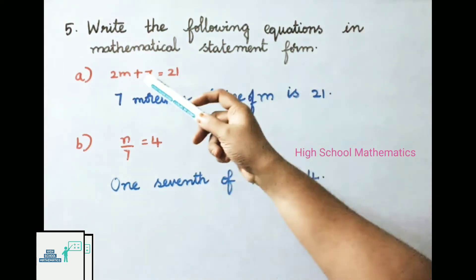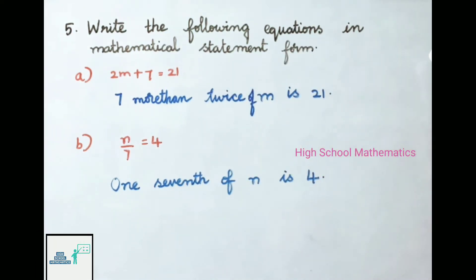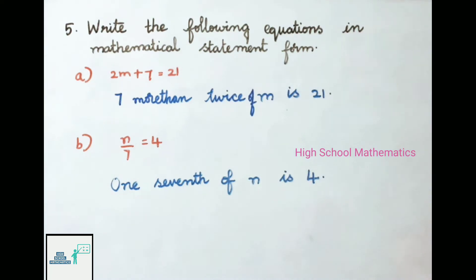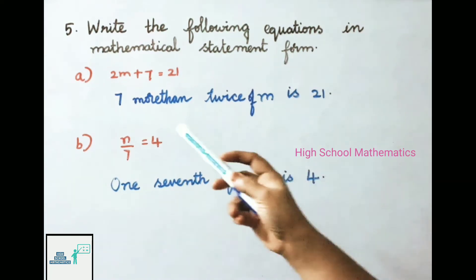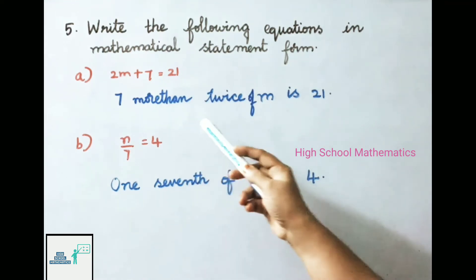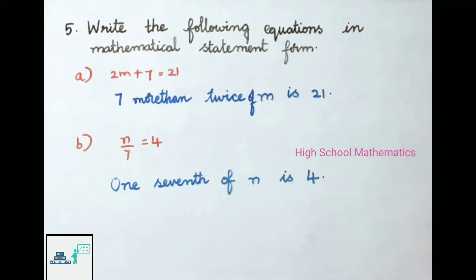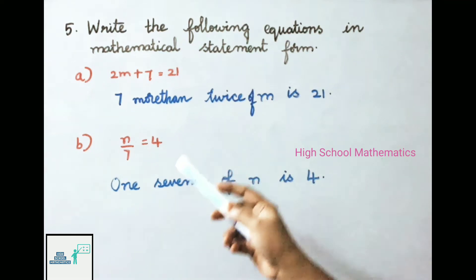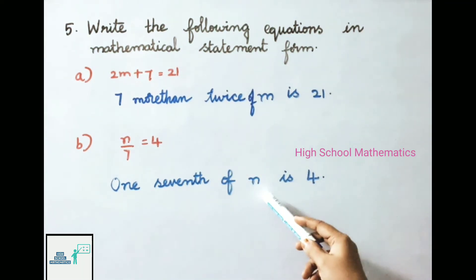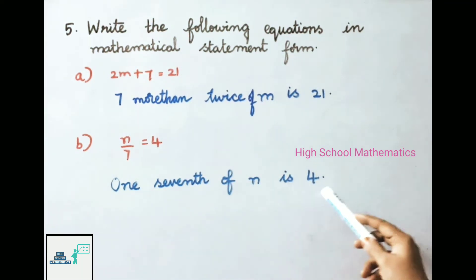Question 5: write the following equations in mathematical statement form. Part A: 2m + 7 = 21 means 7 more than twice of m is 21. Part B: n/7 = 4 means one-seventh of n is 4.